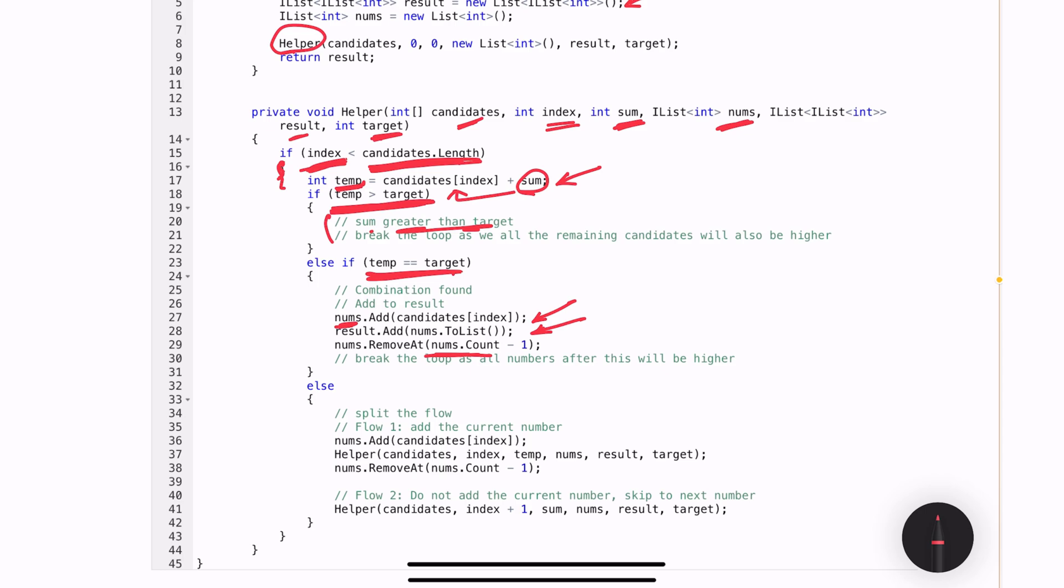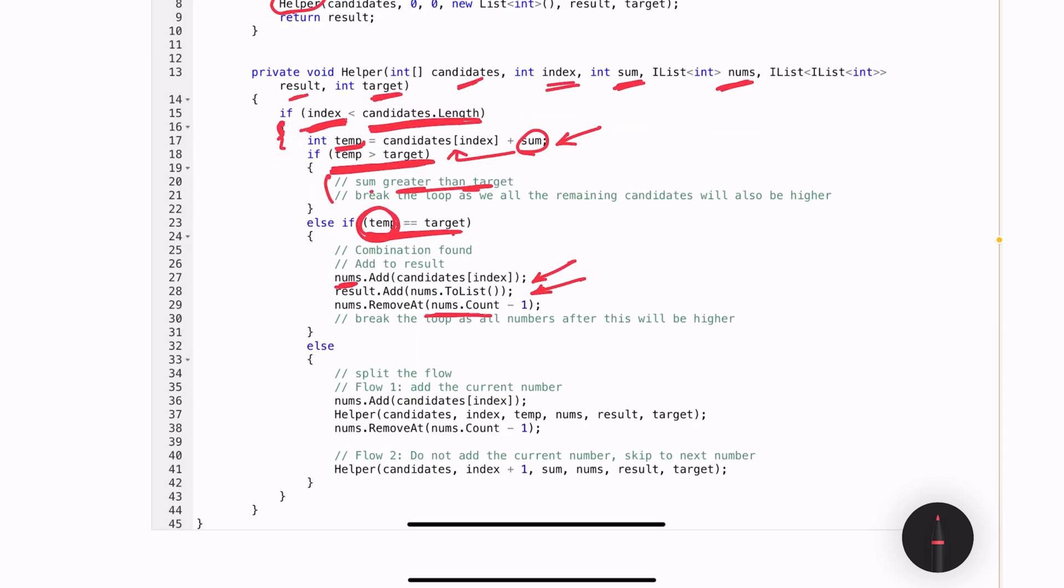Let's say my temporary value is less than target, then we will go inside the else condition. Here's where we are splitting the flow into two sections. The first one is we are adding the same number to the nums and continuing the calculation. Once this helper method execution is complete, we will return the value that we have added.